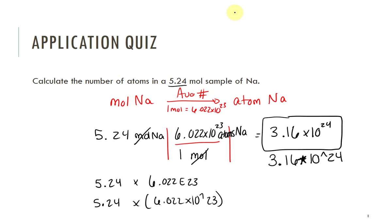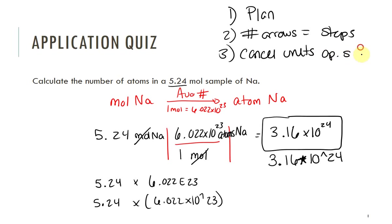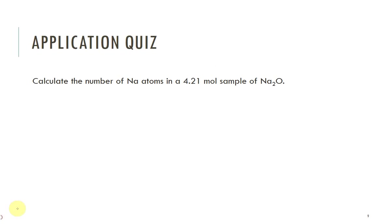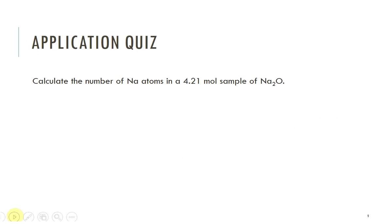The idea is: every time you solve these, make a plan. The number of arrows is going to tell you the steps. To cancel units, they go on opposite sides — if one's on the top and you want to cancel it, it should go on the bottom. Before you really solve it, make sure you're checking your units. We canceled our moles and were left with atoms.